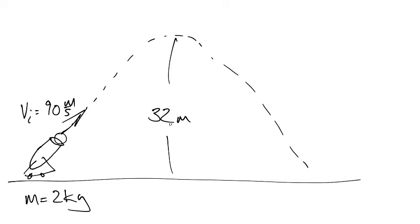Now, quick question you've got to ask yourself is, is it possible that 90 meters per second is going to be able to reach a height of 32 meters? Let's hope so, or else this problem is going to be impossible.